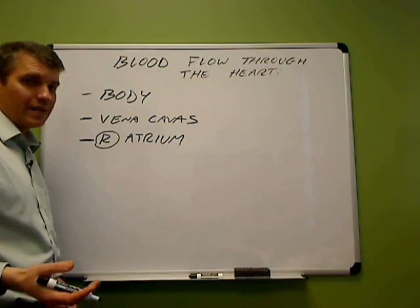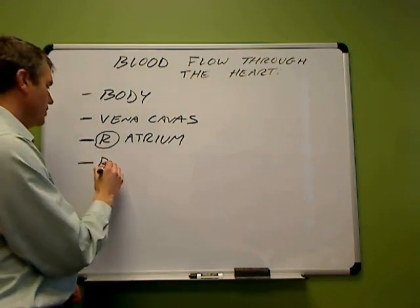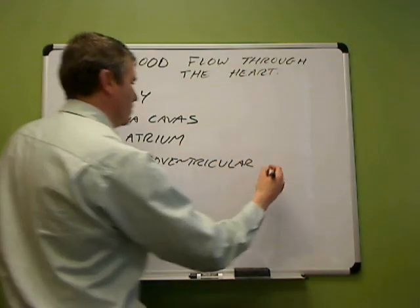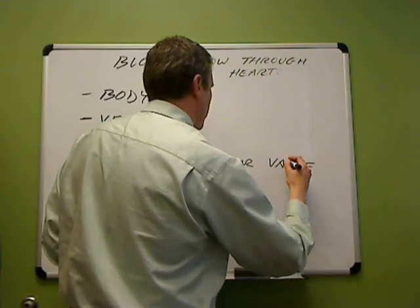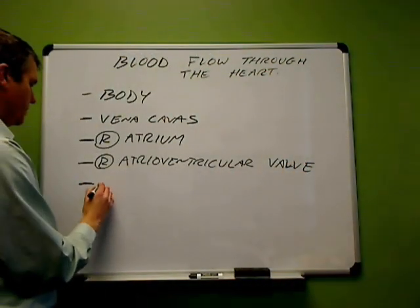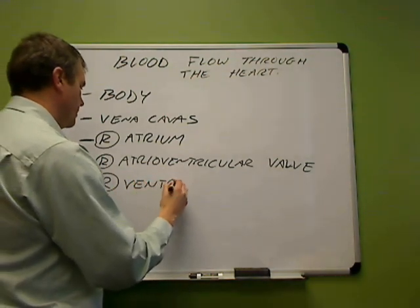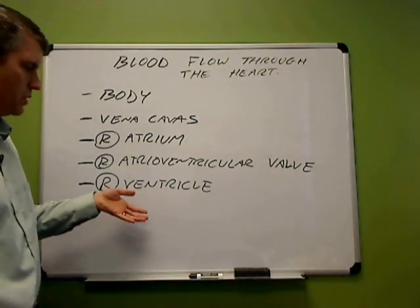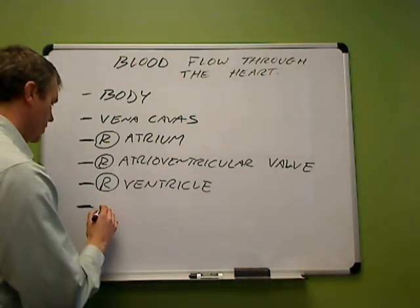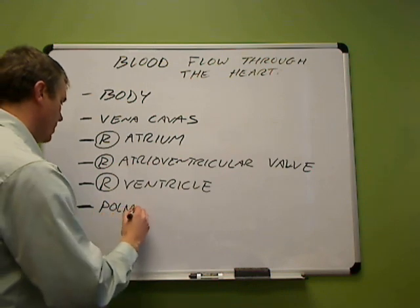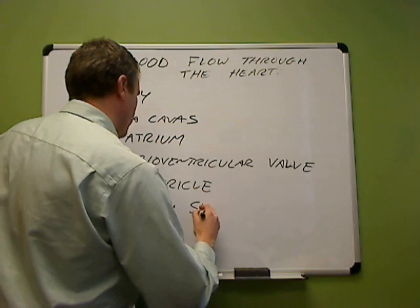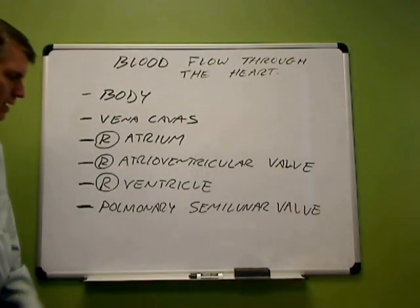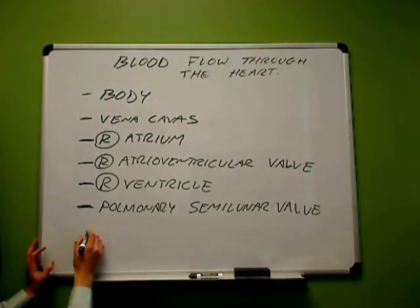From the right atrium, the blood passes through the right atrioventricular valve, and then into the right ventricle. The right ventricle then contracts and pushes the blood up through the next valve, which is the pulmonary semilunar valve.